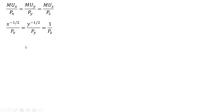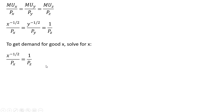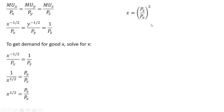The first thing we're going to do is get the demand for good x. We get the demand for good x by taking the far left term and setting it equal to the far right term, and then solving this expression for x. Following the rules of exponents, we bring x down into the denominator, and then squaring both sides gives us the demand for good x.